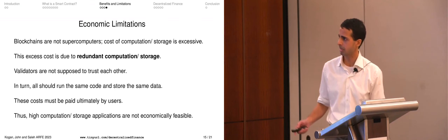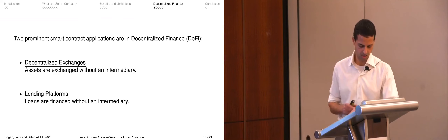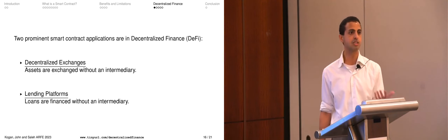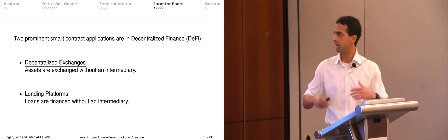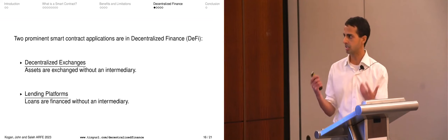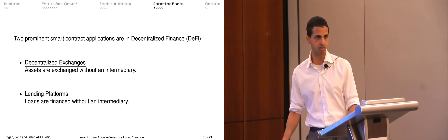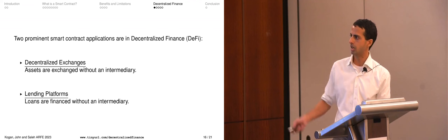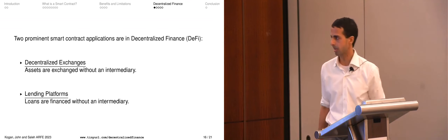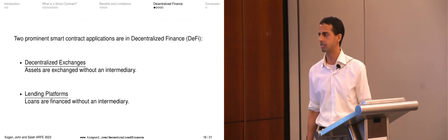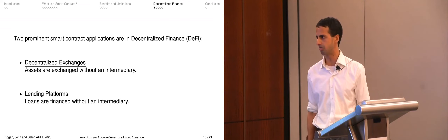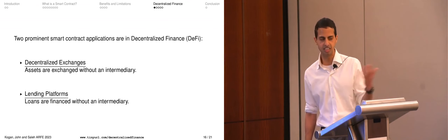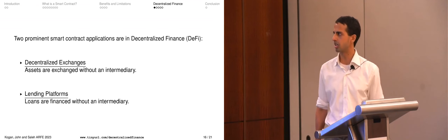Let me move to applications of specific relevance to finance. I've been telling you what you can't do — but what is actually happening? I started by motivating with a lending platform. The term 'decentralized finance' or DeFi has become prominent because something is actually happening. The two most prominent applications in finance are decentralized exchanges and lending platforms. Think of decentralized exchanges as a centralized exchange but with no intermediary in the middle. Think of a lending platform as almost a bank, but what's intermediating is a chunk of code — a smart contract or a bunch of smart contracts.